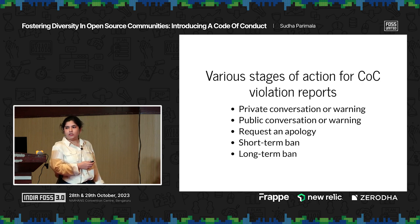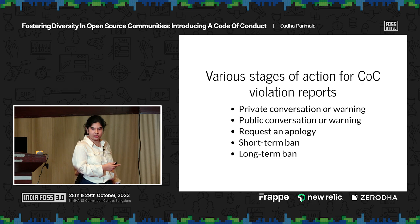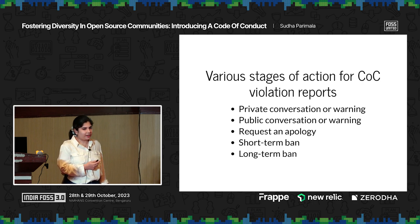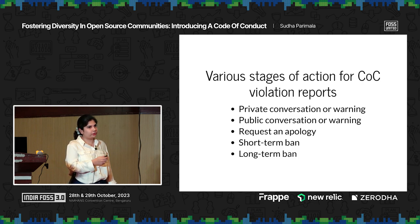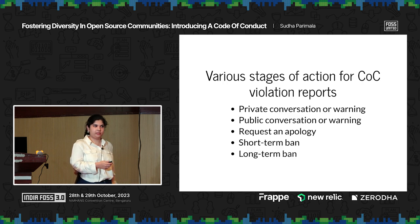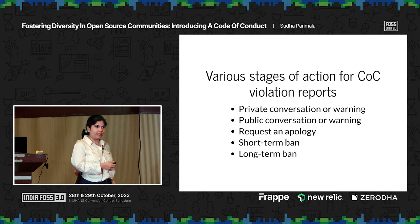As for the text, you can use one that already exists or write one from scratch. We ended up using one that already exists, which I would recommend — there's really no point in rewriting something that's already been used and refined. These are the various stages of action when there's a violation report: the team first has a private conversation with the person reported to have done a violation; this may escalate to a public conversation if that doesn't work; for extreme cases, they will be requested to apologize; and for more extreme cases, there are bans — though I hope it doesn't get to that.